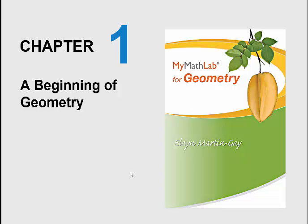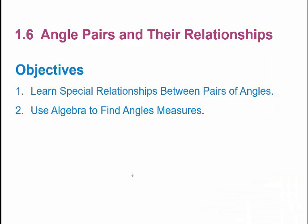In this lecture, we continue in Chapter 1, moving into Section 1.6, which is about angle pairs and their relationships. We have two objectives in this section: first, we want to learn special relationships between pairs of angles — we'll do a lot of definitions. And then in the second part, we'll use algebra to find angle measures.